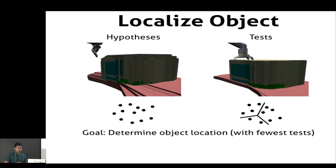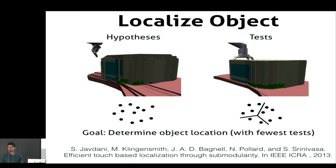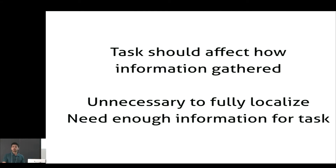Our initial approach said: you have a set of hypotheses, your tests prune hypotheses away, and our goal should be to determine the object location completely using as few tests as possible. A bunch of people have approached this problem, and we published some work that did this, and all was great—until we revisited it and said something's weird: we're not taking into account the task you're trying to perform. In fact, we're probably doing unnecessary work, since you don't need to fully localize the object; you just need enough information to accomplish your task.